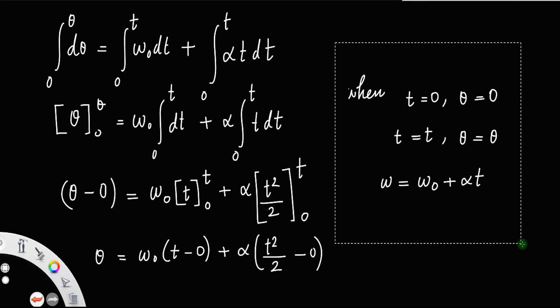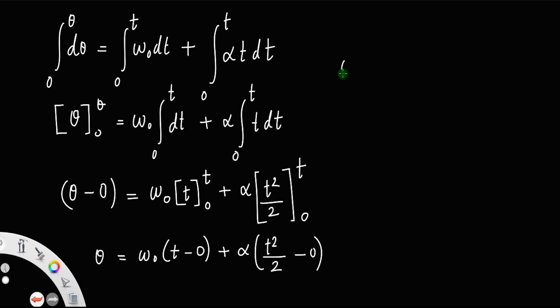The final expression for the second equation of rotational motion is θ = ω₀t + ½αt².